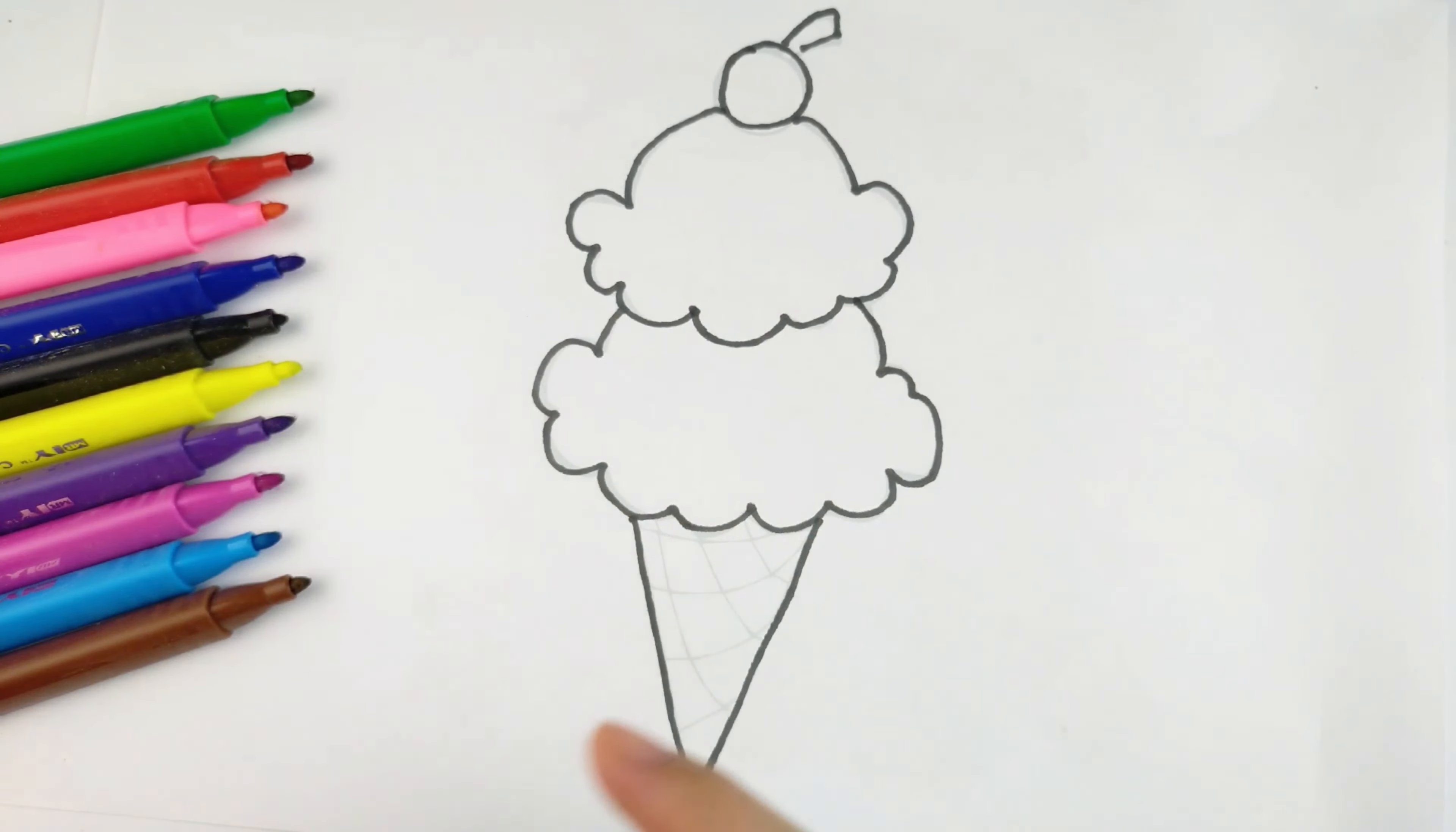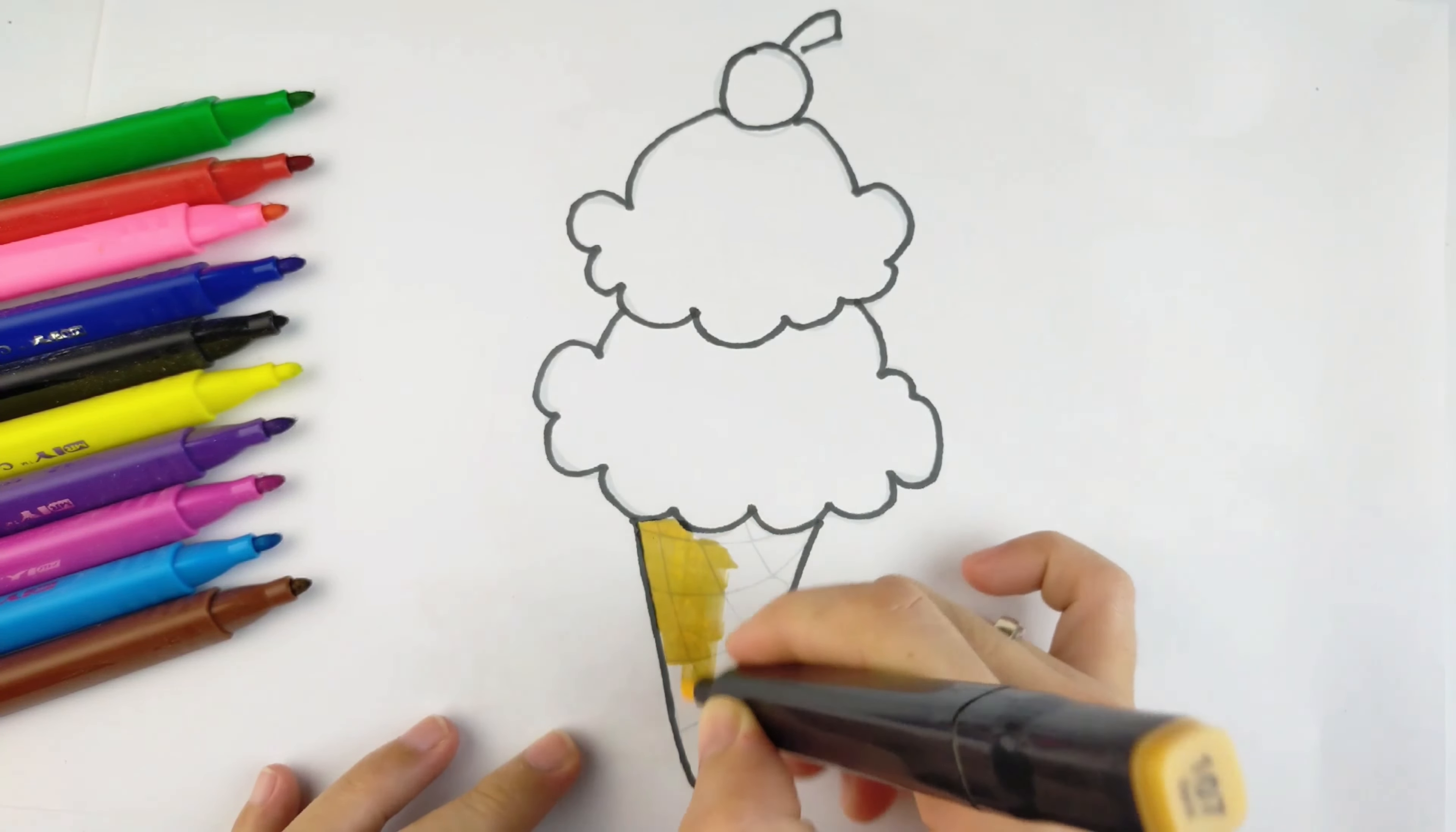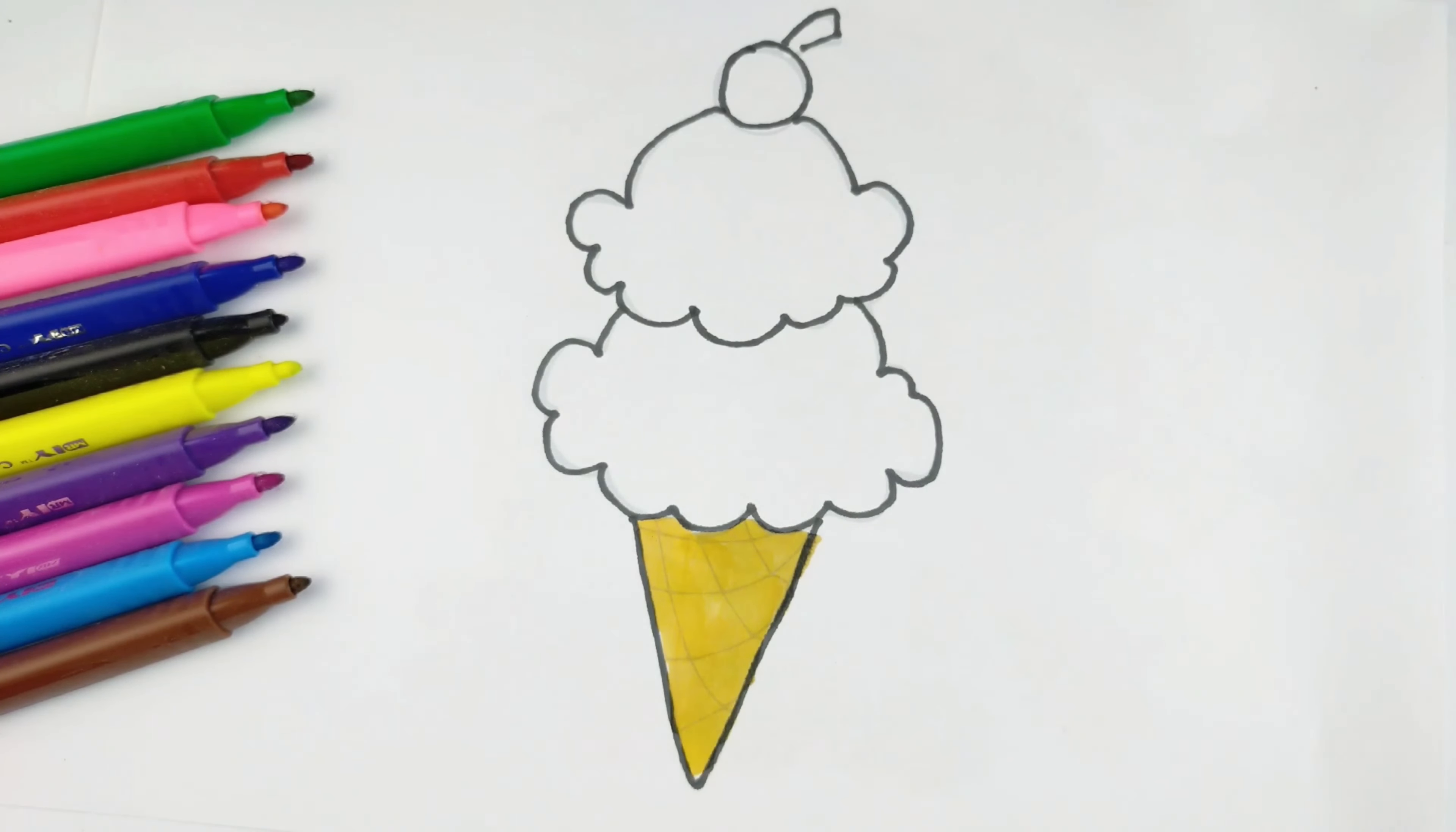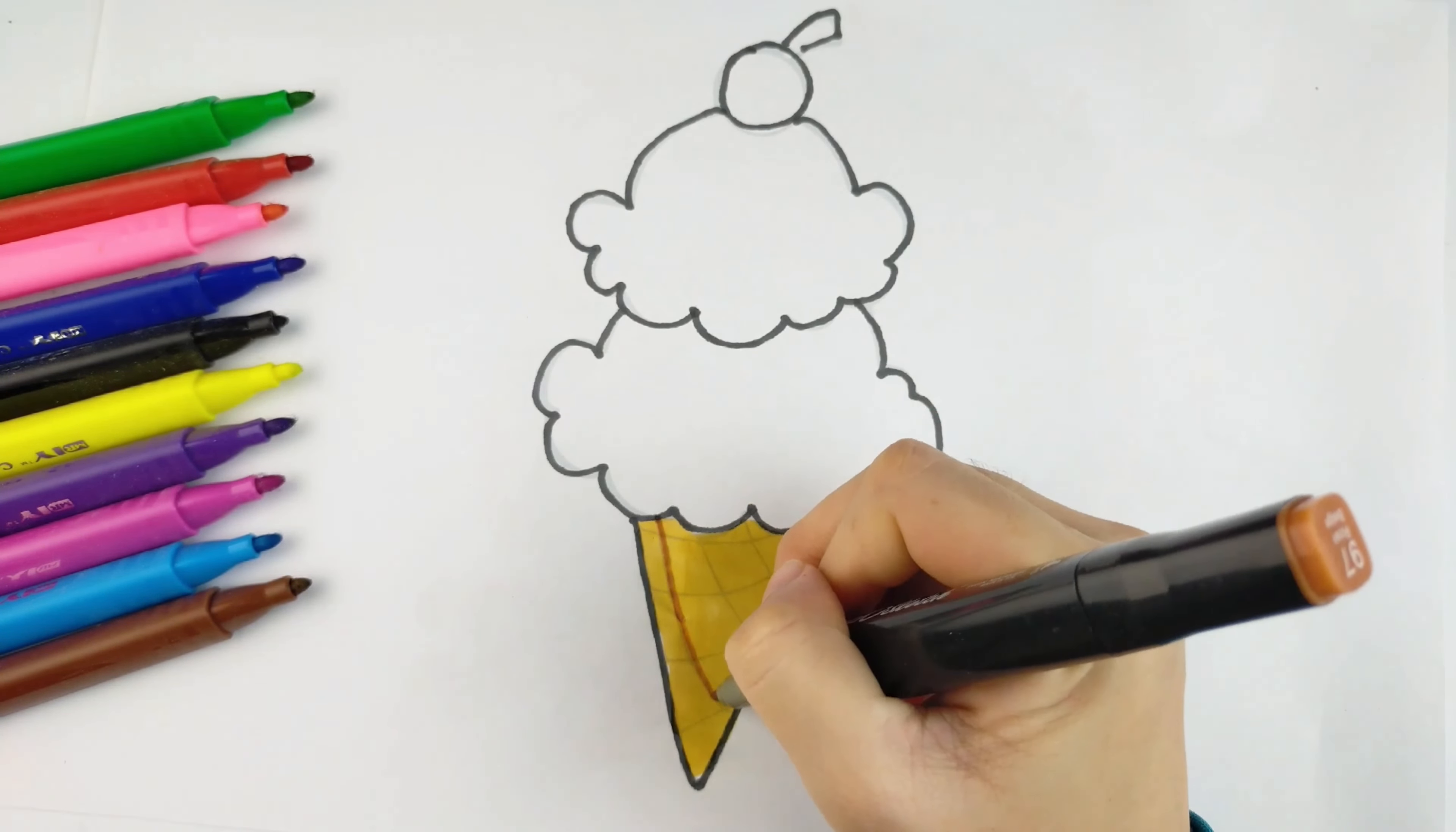Then, we color the ice cream cone together with yellow color. Don't forget to also thicken the lines inside the ice cream cone.